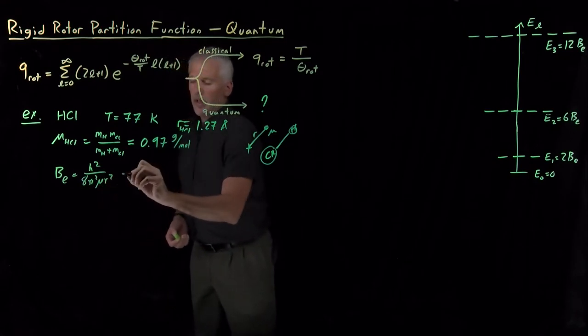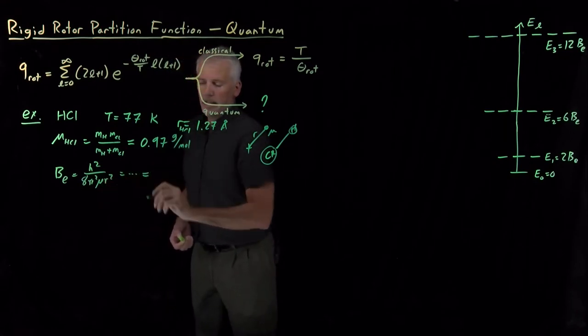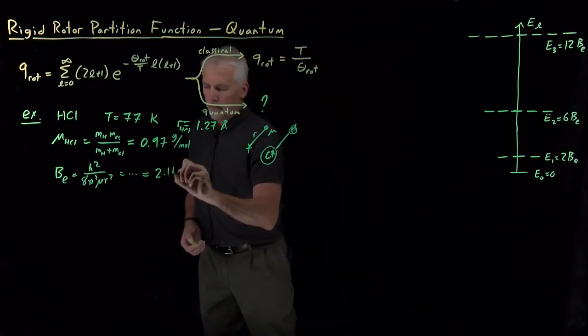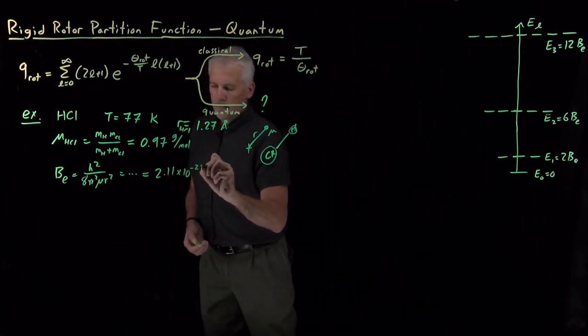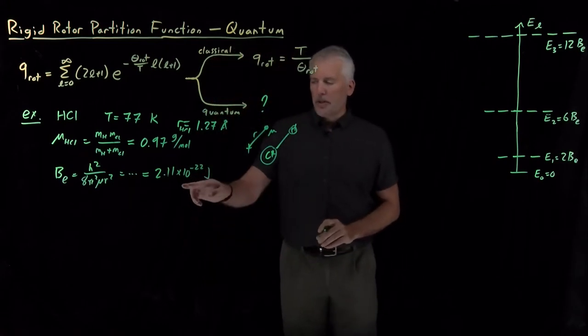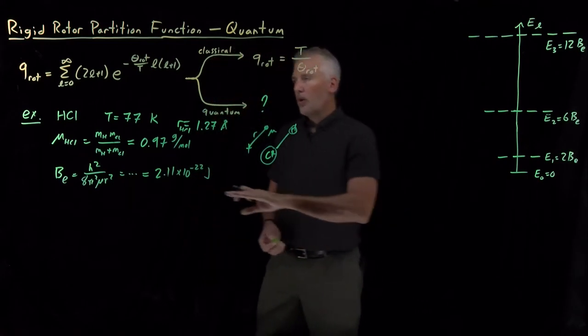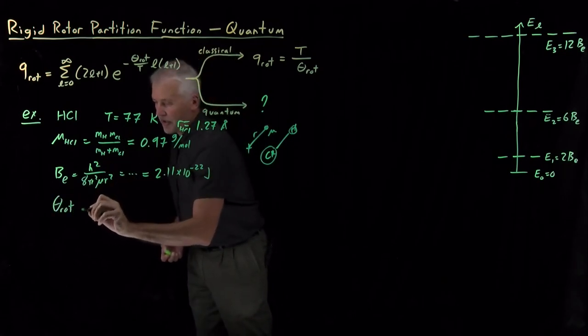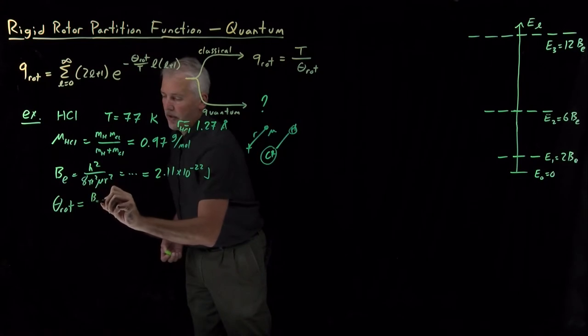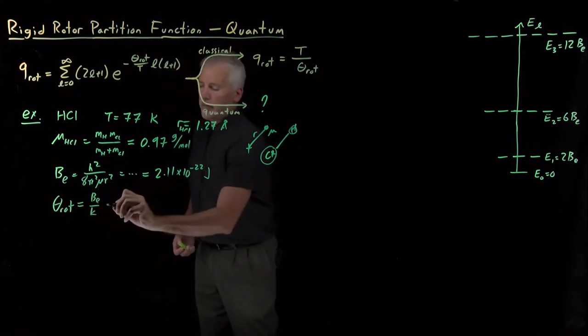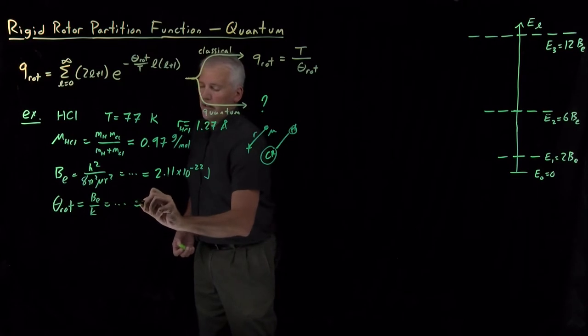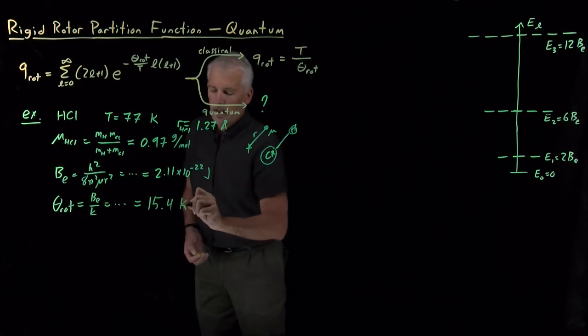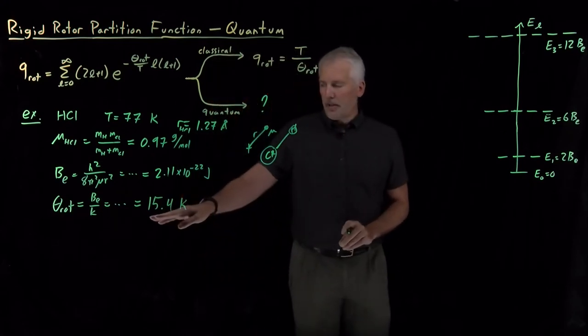Now that we know mu, I'll skip the arithmetic and tell you that that works out to be 2.11 times 10^-22 joules. We're almost to being able to calculate the rotational temperature, which is just this value divided by Boltzmann's constant. And again, skipping the arithmetic, that works out to 15.4 Kelvin.